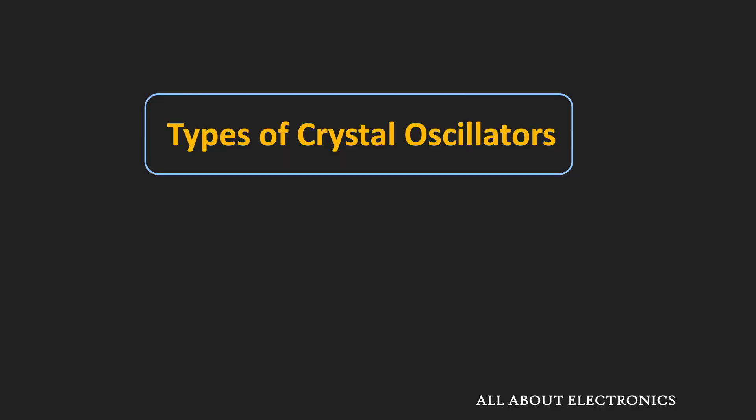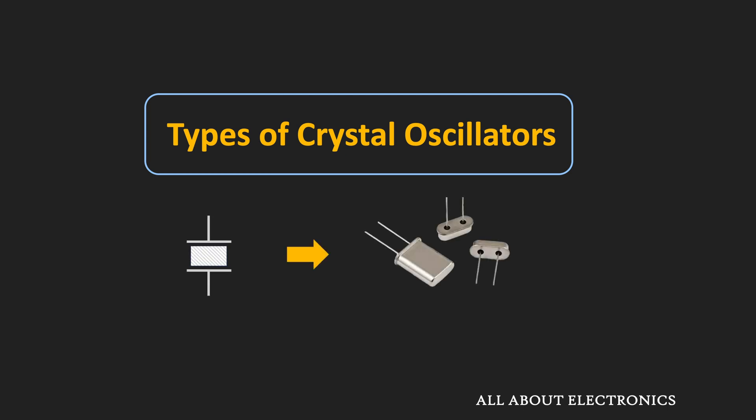Hey friends, welcome to the YouTube channel All About Electronics. Previously, we have seen what a crystal oscillator is, how it works, and the important parameters that need to be considered while selecting a crystal for a specific application. In this video, we will see the different types of crystal oscillators used commercially for different applications, and we will also cover the basic working principle of each type.